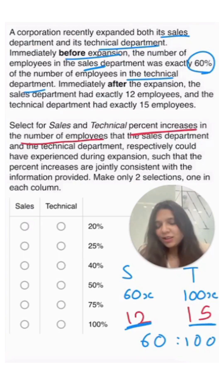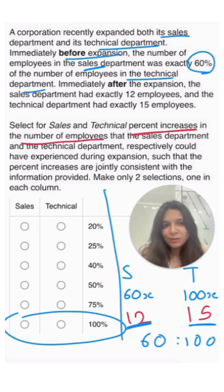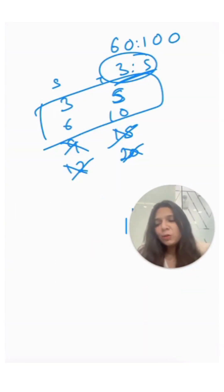But again, look at the answer choices. Look at what the percentages are. The highest percentage is 100%. But if the number of sales employees were 3, then 3 to 12 would have been 300%, not 100%, and that's not in the options.